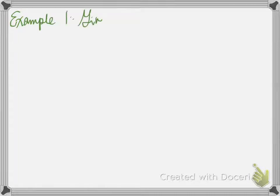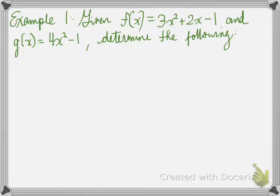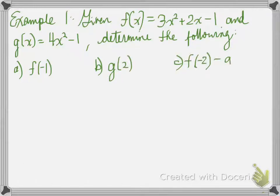Moving forwards. Let's look at an example. Given f at x equals 3x squared plus 2x minus 1 and g of x, so that is another function g, okay, 4x squared minus 1, you're asked to determine the following. So you're asked to determine, let's see, when f at negative 1, g at 2, f at negative 2 minus g at 1, and finally the last one, g at x equals 0. So we're going to go through each one separately.